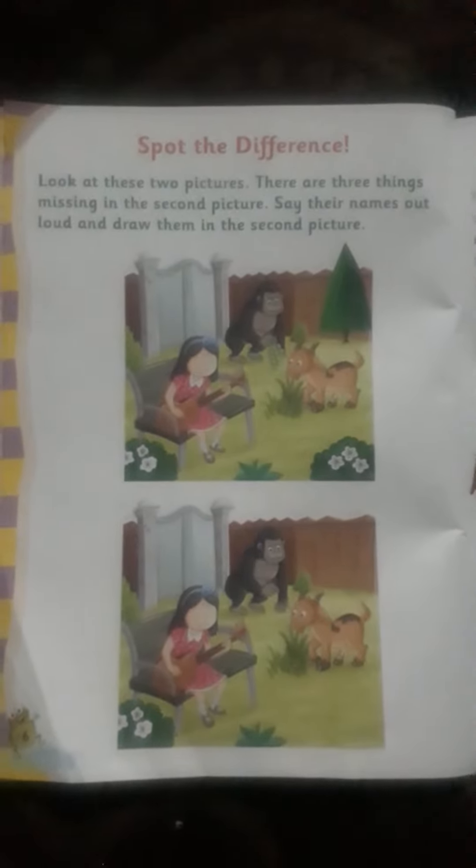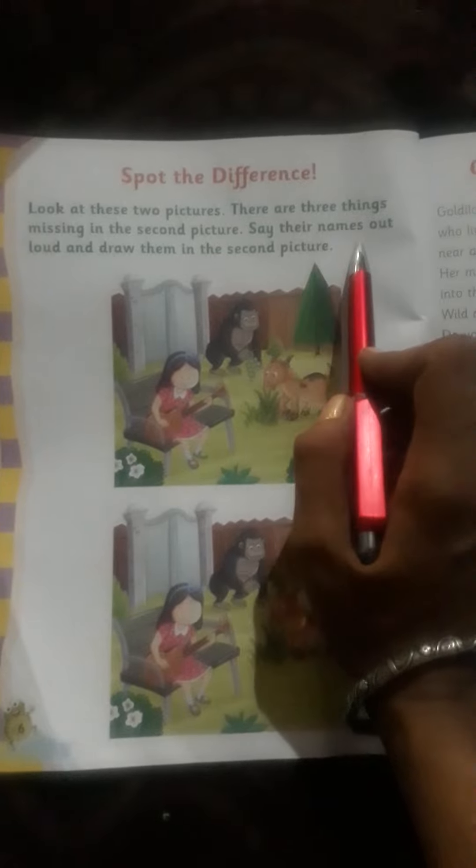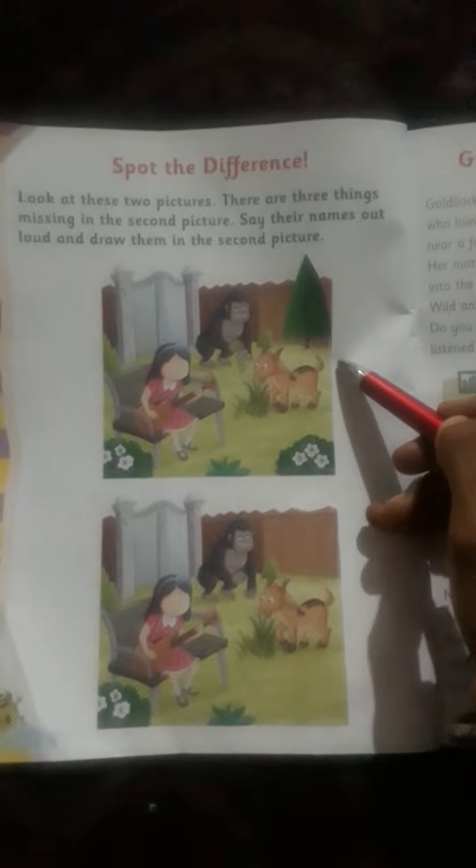This is page number six. What they are saying here on page number six — as you can see at the bottom — is 'Spot the Difference'. Spot the difference means you have to find the difference between the two pictures given. They have written the instructions in green lines. Look at these two pictures: there are three things missing in the second picture. Say their names out loud and draw them in the second picture.